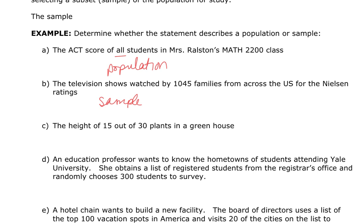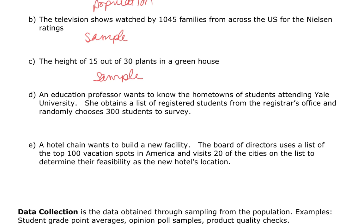Example C: the height of 15 out of 30 plants in a greenhouse. There are only 30 plants total, but since we're only choosing 15, this is just a sample — a smaller portion of the entire population of 30 plants. For D and E, an education professor wants to know the hometowns of students attending Yale University. She randomly chooses to survey 300 students — that 300 is the sample, the smaller subset. The population is all students attending Yale University.